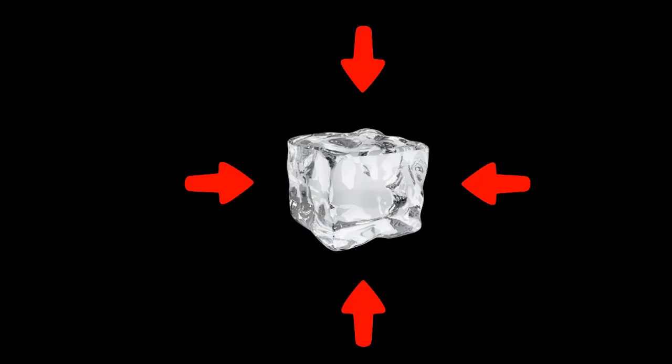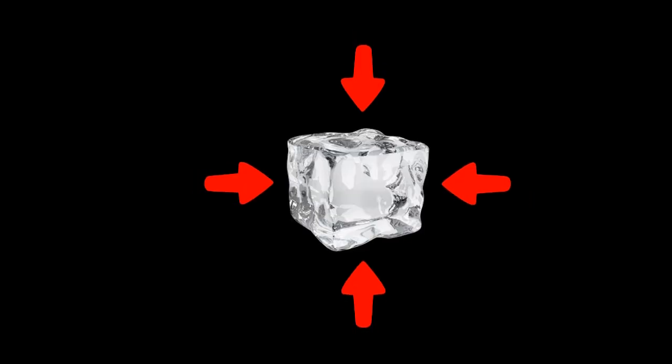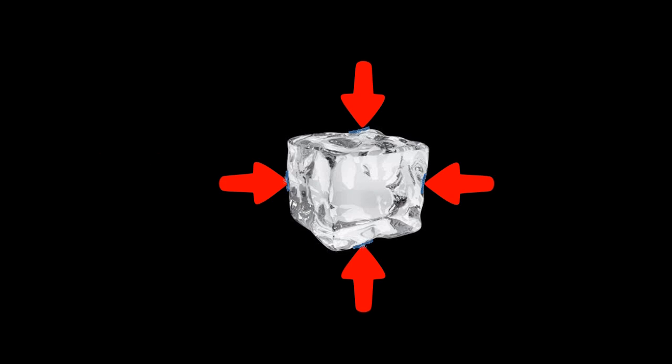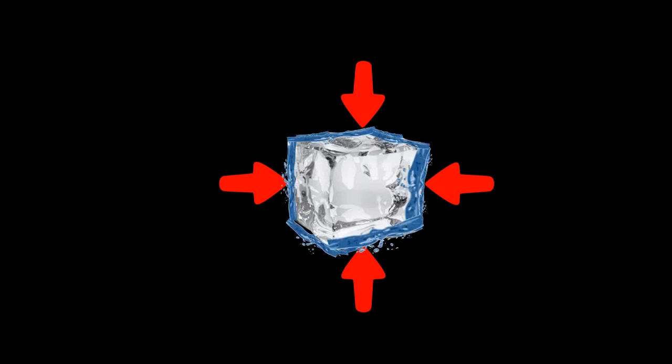The first proposed explanation to ice slipperiness is related with pressure melting, that is, the decrease of the melting temperature due to increasing pressure, which creates a thin layer of water on top of the ice, making it slippery. This effect can be understood in terms of Le Chatelier's principle.